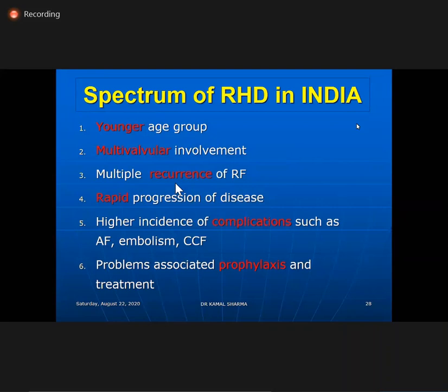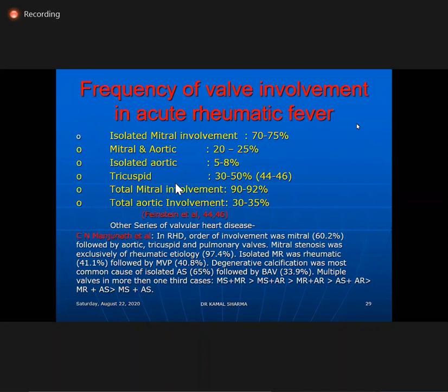In India, most patients are younger, multivalvular, with recurrent episodes, rapid progression, high incidence of AF, embolism, CCF, and require lifelong prophylaxis and treatment. Isolated mitral valve disease can itself be responsible for 70 to 75% of patients, which means that single valve disease does not rule out rheumatic etiology, especially for mitral valve disease.